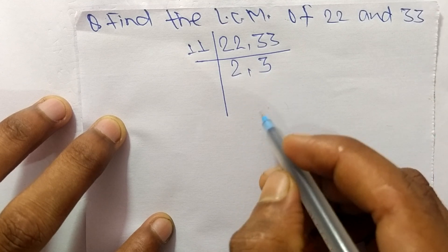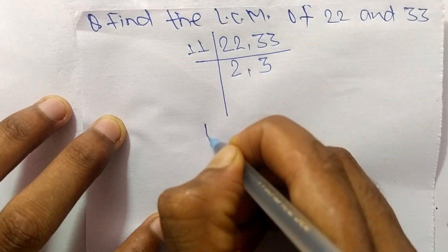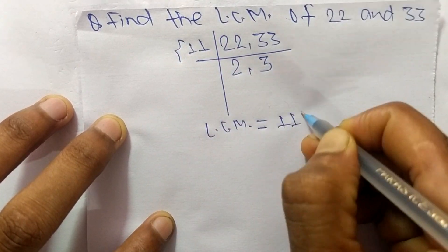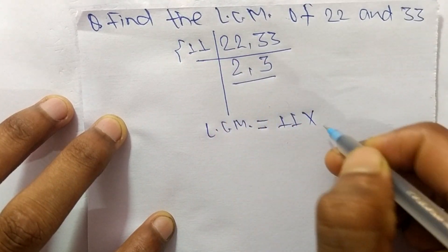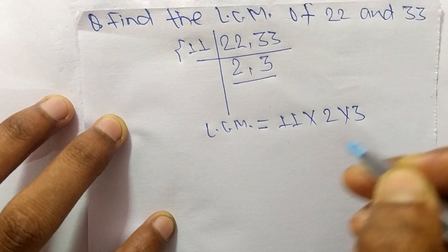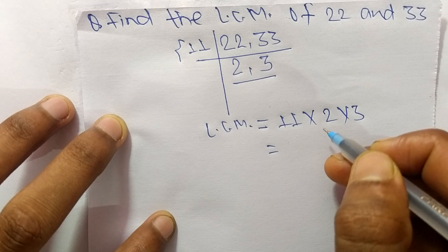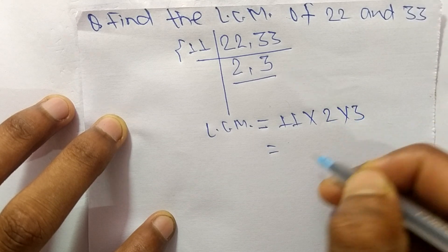So its LCM is equal to, from this part it is 11, and from this part it is 2 times 3. So 11 times 2 means it is 22, and 22 times 3 means it is 66.